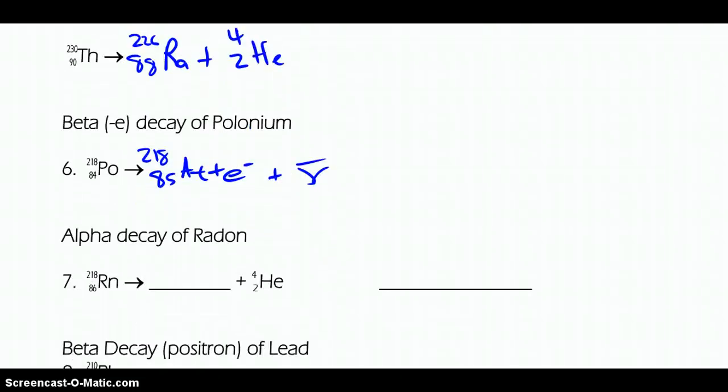And now, an alpha decay of radon. Well, there's our helium nucleus. So, 4 from 218 is 214 nuclides in this new one. And 2 from 86 makes 84. We go to 84 on the periodic table, and we're talking about polonium, named after Marie Curie because she was from Poland. That's the alpha decay. Alpha.